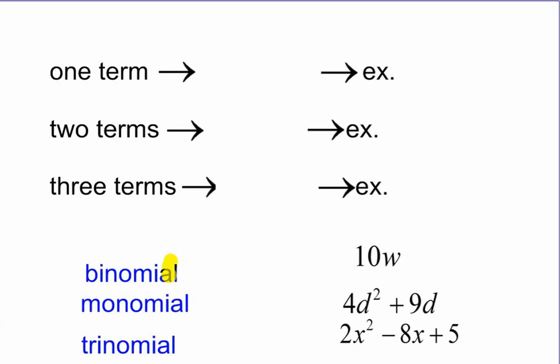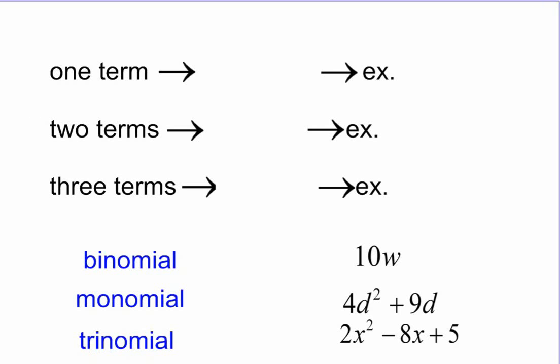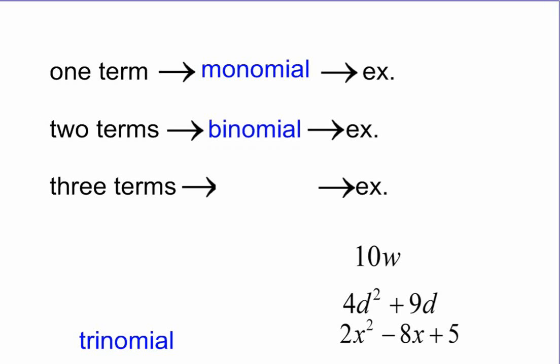Okay, so out of these three words right here, which one do you think is one term? A one-term polynomial. Well, if you know your prefixes well, you'll know that monomial has to be the word. Mono meaning one. So I can see the prefix mono right there. Okay, meaning that that's a one-term polynomial. Two terms. Well, bicycle, two wheels. Binomial, two terms. And finally, then trinomial must be the one with three terms. And again, I like to think of tricycle, tri, triangle, hey, three. Okay, so three-term polynomial is a trinomial.